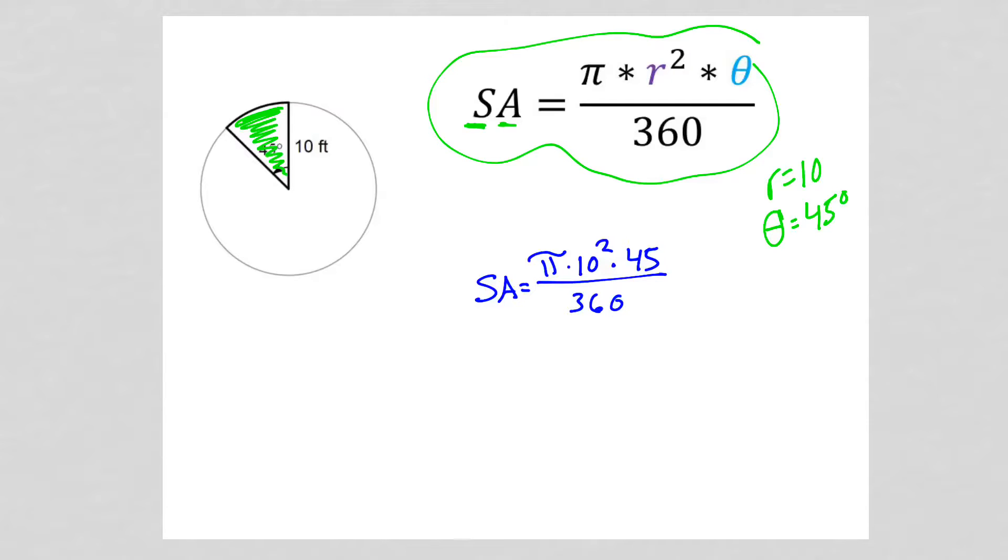I punch that in my calculator and I get 39.269. I'm going to round that up to 39.3 feet squared. Because we're talking about area, make sure you square your units.